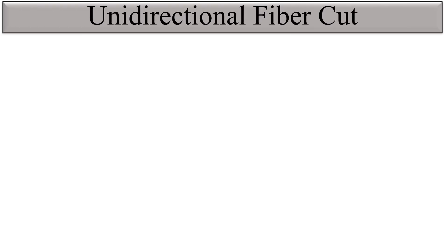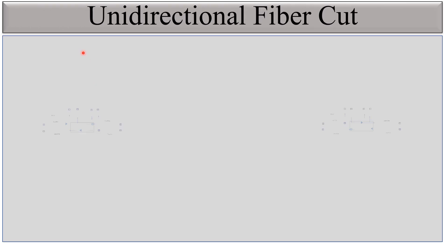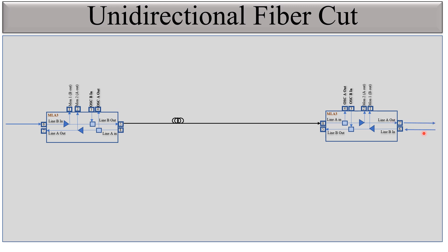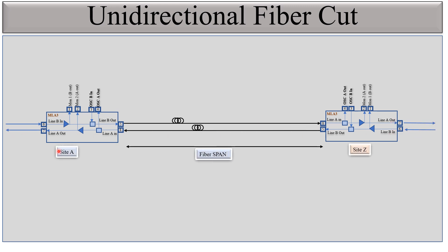Let's take the example of a unidirectional fiber cut. This is the Site A amplifier and this is the Site Z amplifier. You can see the direction from Site A to Site Z and the direction from Site Z to Site A. This is the fiber span — the length of the fibers. When a fiber cut appears, the affected port will trigger alarms.